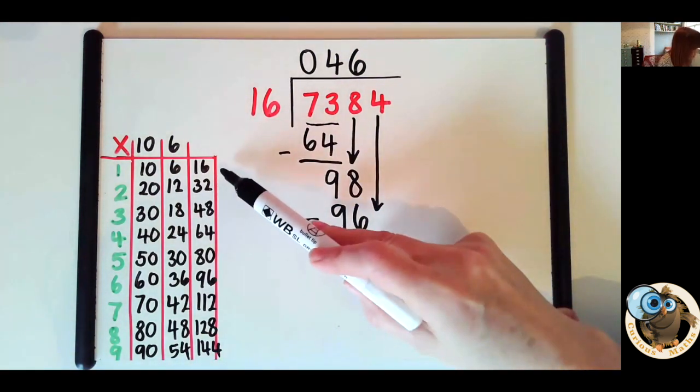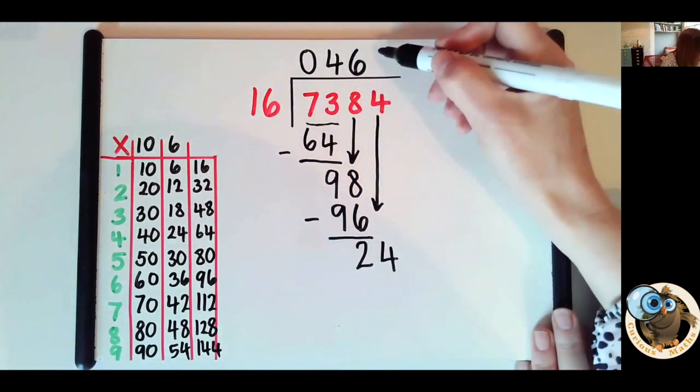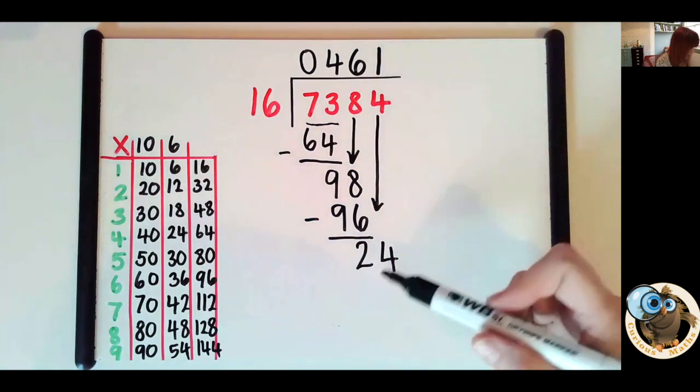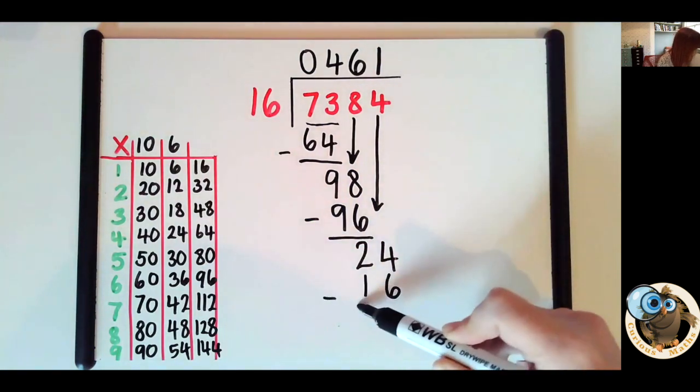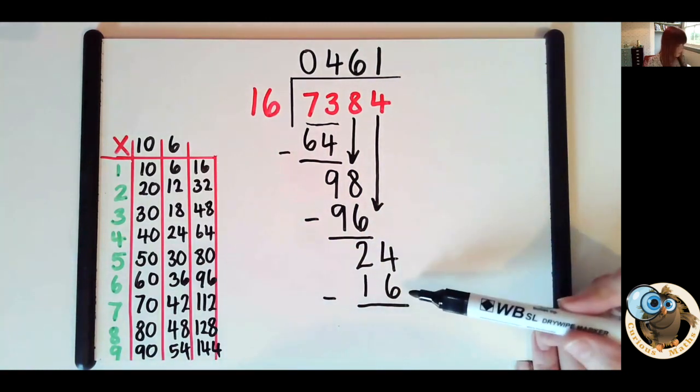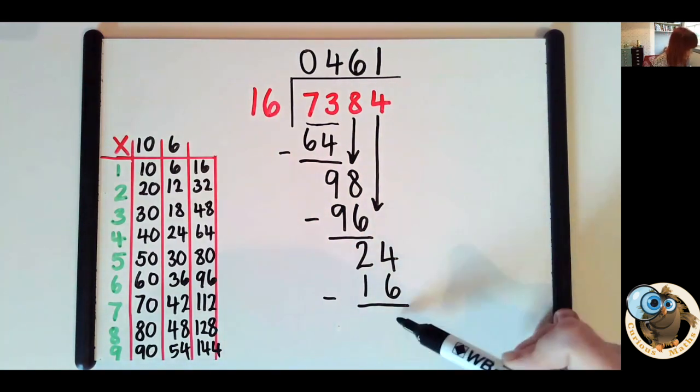How many 16s in 24? Well, one 16 is 16, two 16s too many. So it must be one 16. And I write the 16 underneath there, and I take it away. So I can count up to find my answer. So 16 to 20, I've added 4. 20 to 24, I've added another 4, my difference is 8.